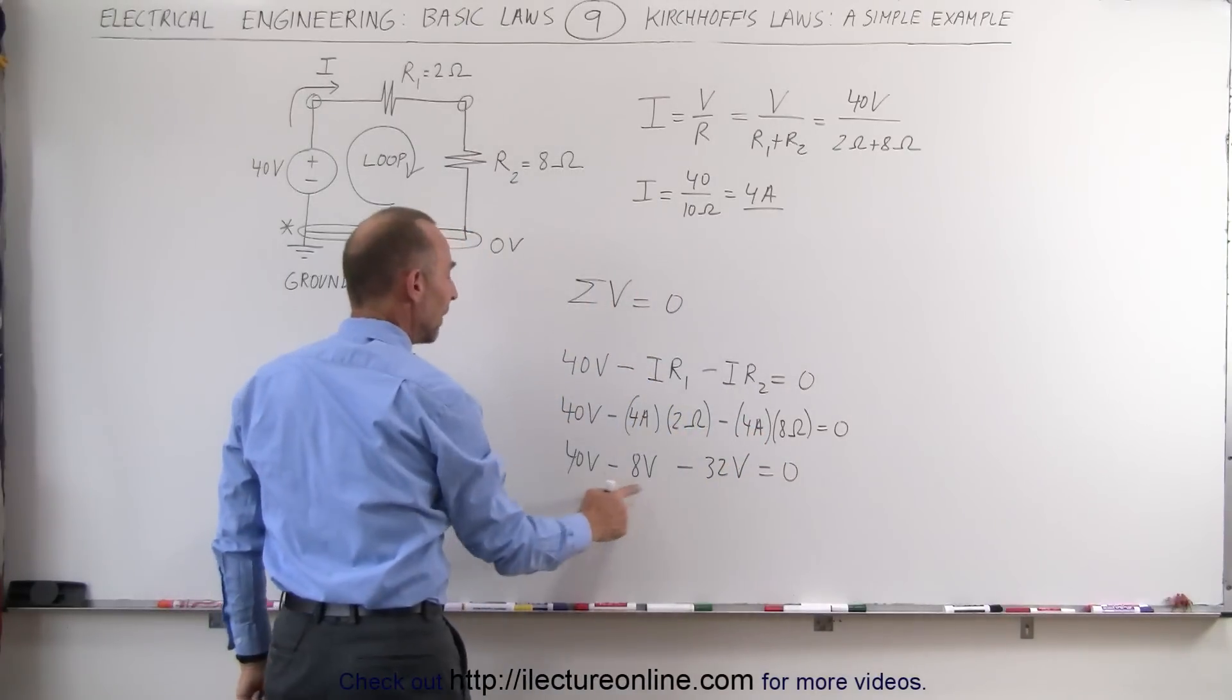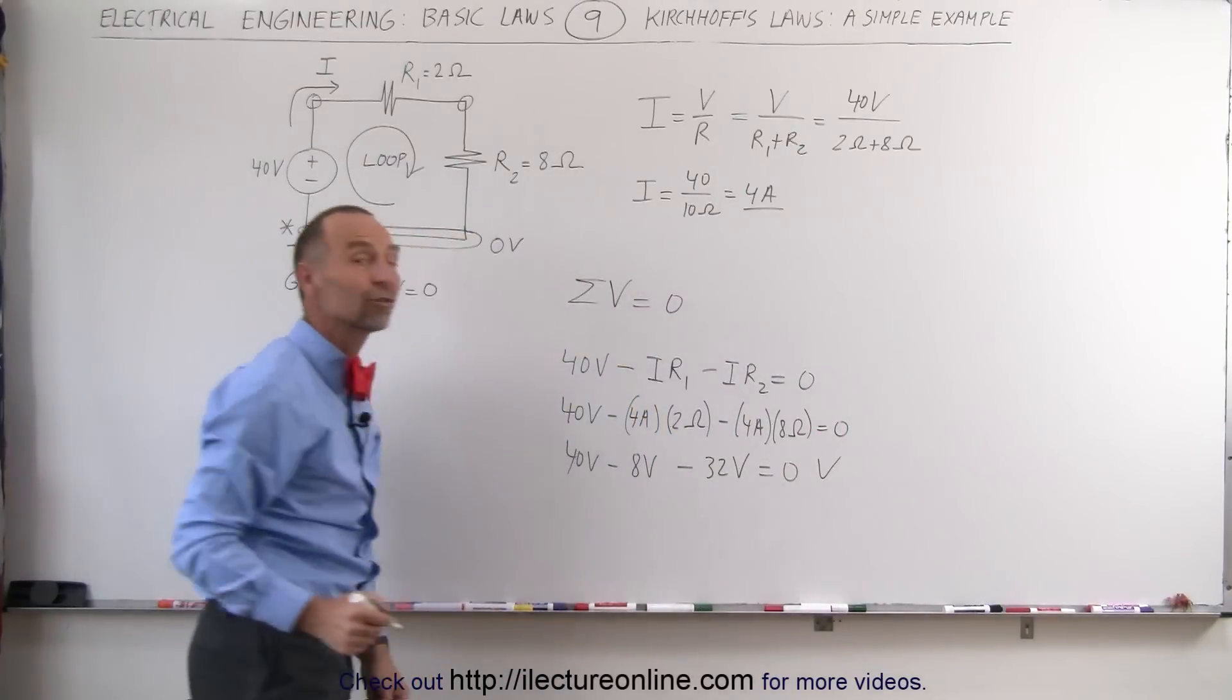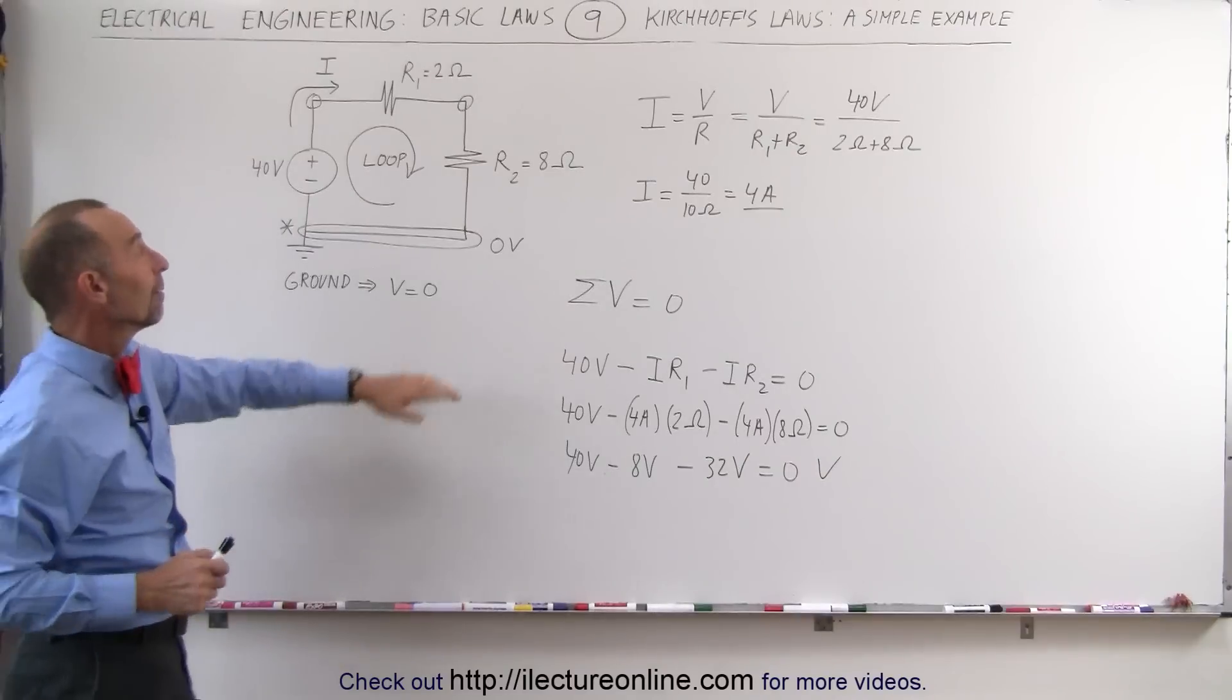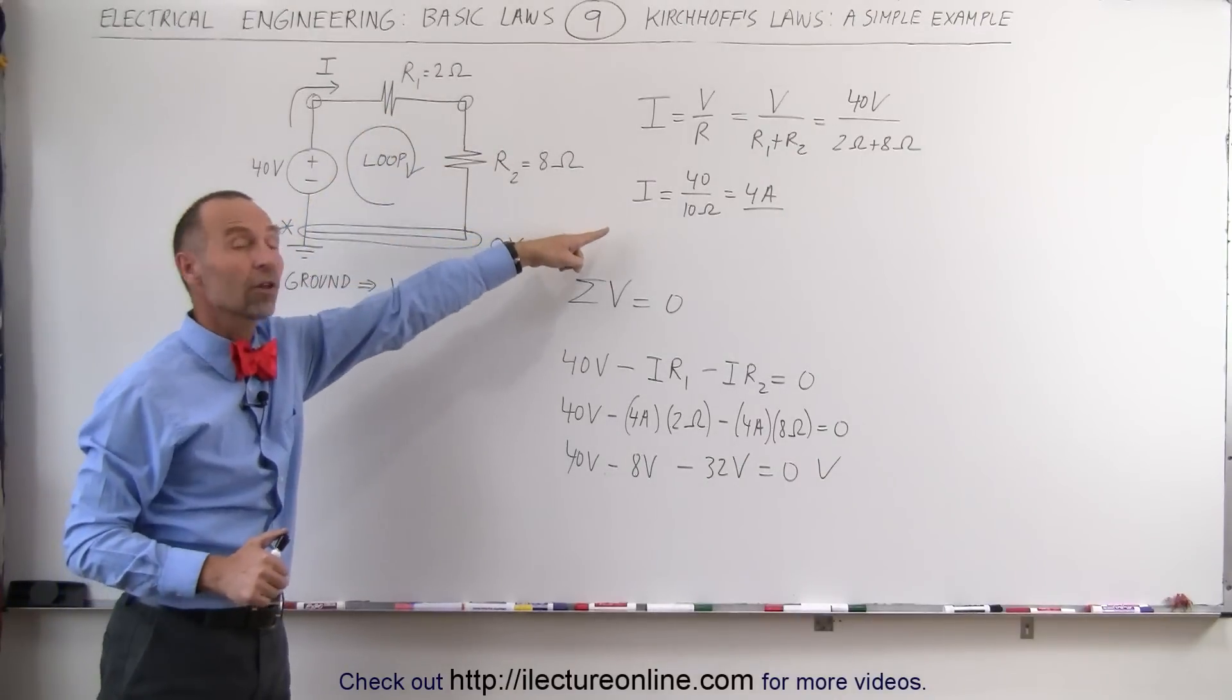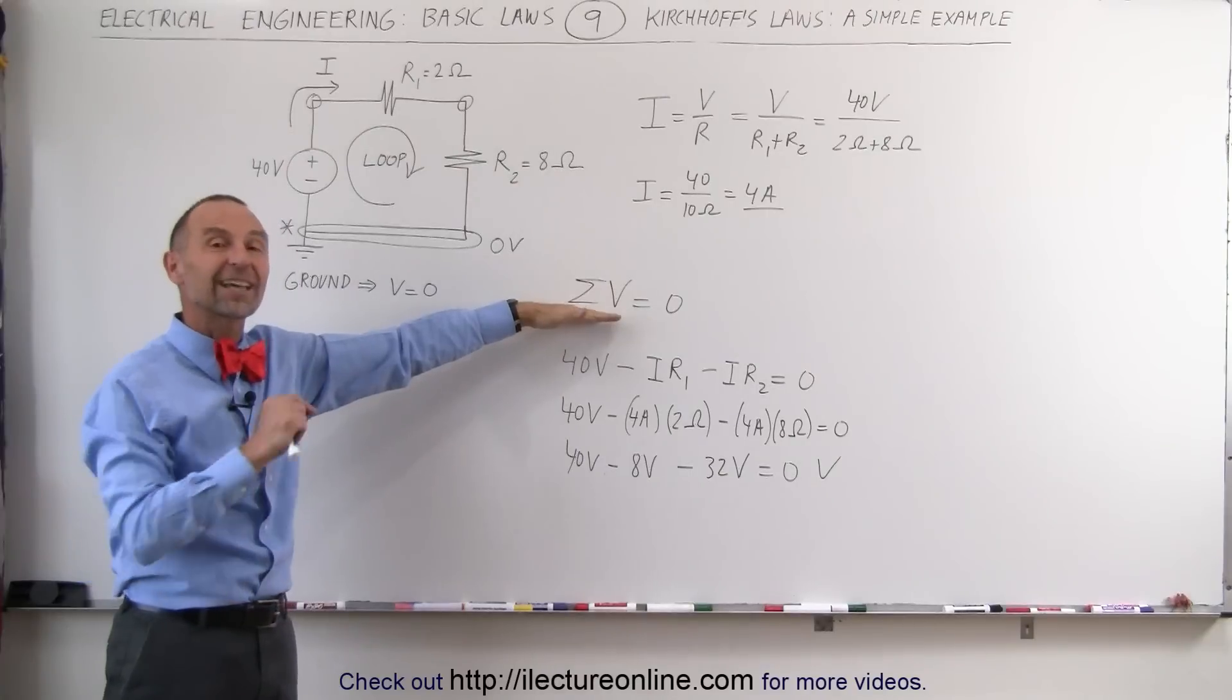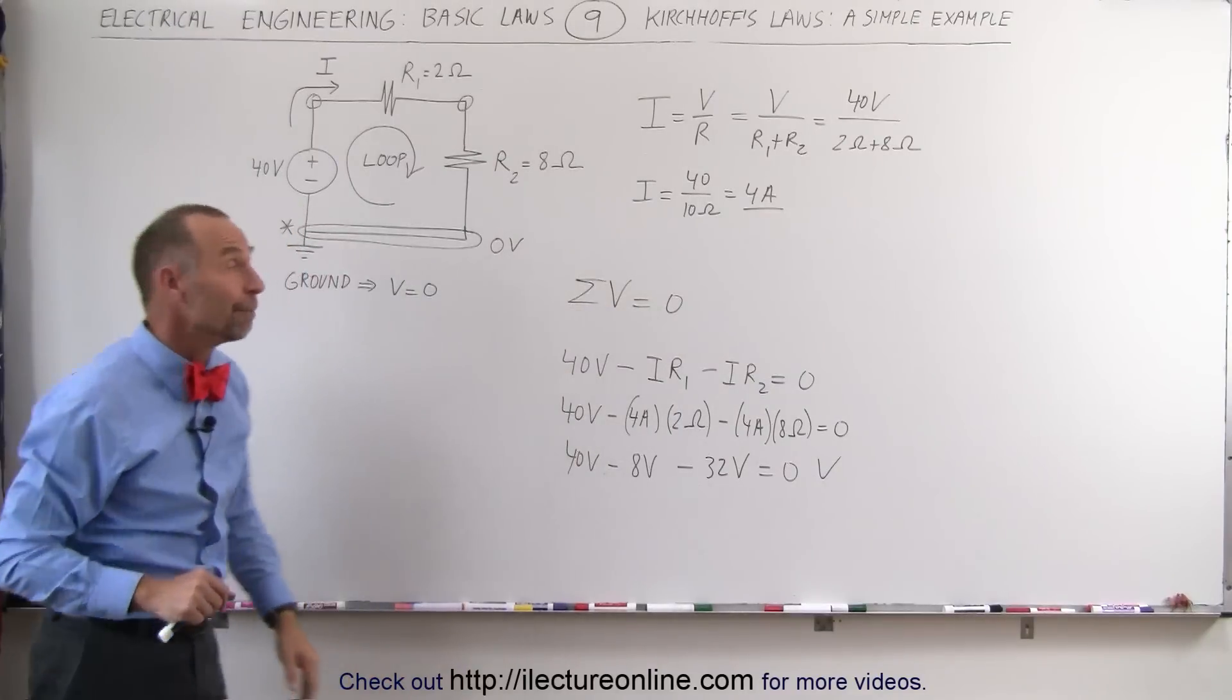And sure enough, 40 minus 8 minus 32 does add up to zero. And we've shown that Kirchhoff's law here does work indeed. We proved it by finding the current using Ohm's law and then applying Kirchhoff's second law, the sum of all the voltages add up to zero, to show that it does indeed work that way.